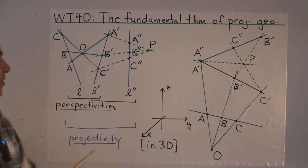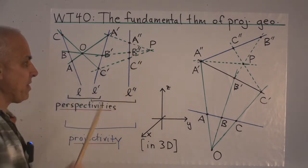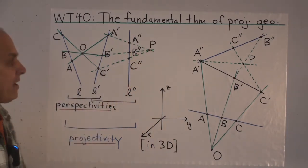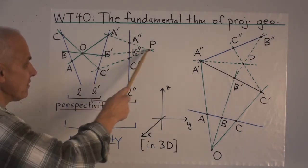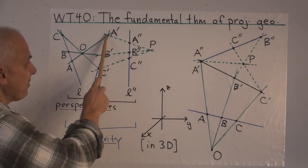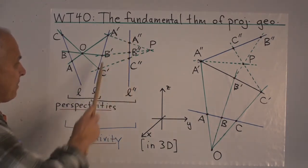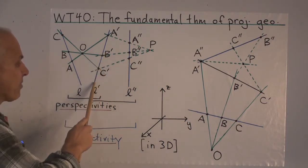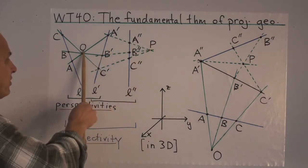Now let's suppose that we have another perspectivity between L prime and L double prime given by a perspective point P. That means we draw lines through P. P is like our eye, and we're thinking of this line and this line as being connected by these lines of vision from P. So A prime is connected to P and yields the point A double prime on L double prime. B prime corresponds to B double prime, C prime corresponds to C double prime, and all points on L prime correspond to points on L double prime. So that's another perspectivity — this one has center P, the previous one had center O.